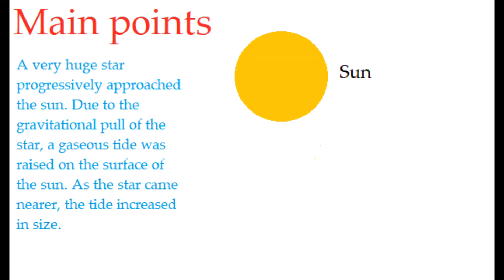A very huge star progressively approached the Sun. Due to the gravitational pull of the star, a gaseous tide was raised on the surface of the Sun.